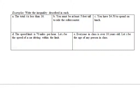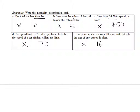Word situations can feel tricky. You still want your variable on the left-hand side and the number on the right. Think carefully about which symbol to use based on keywords. For example: T is less than 16 — numbers less than 16 are 15, 14, and so on. Because the variable is on the left, you simply write less than.